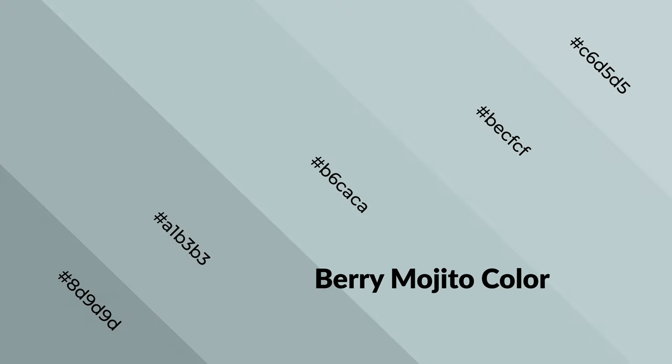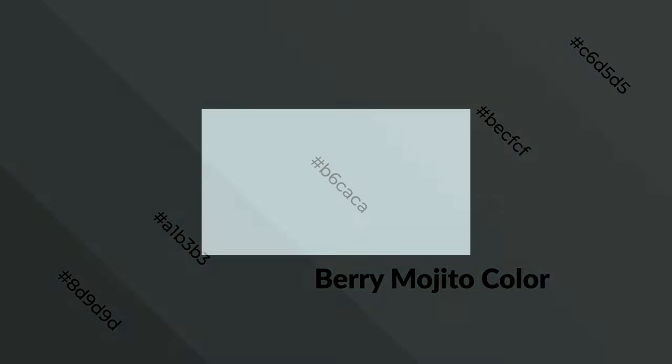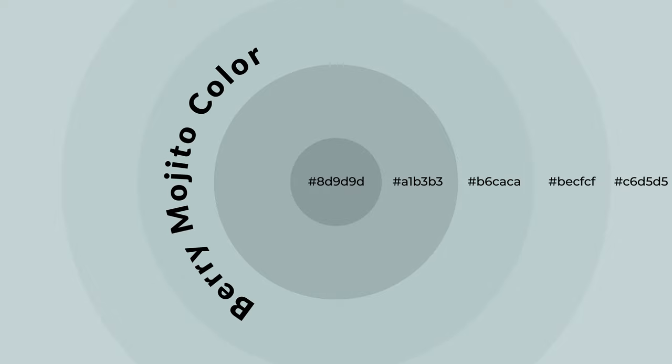Cool colors are like water, ice, sky, grass, soft, and snow. You can see them used in baby products.